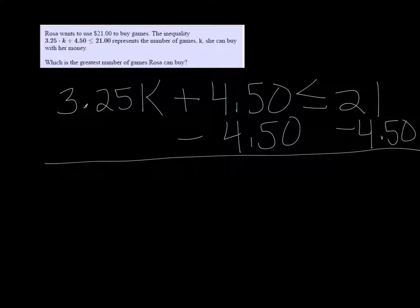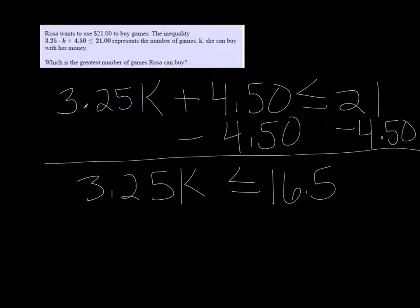So 21 minus 4.50 is 16.50. So we have 3.25k is less than or equal to 16.50 and we'll divide both sides by 3.25.